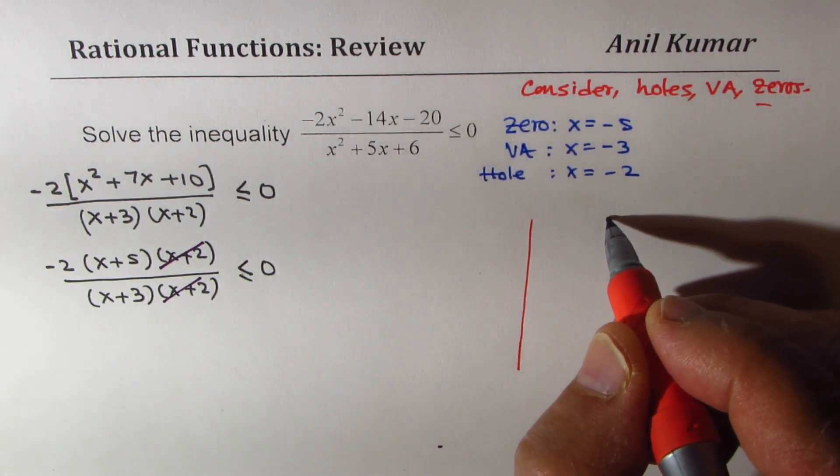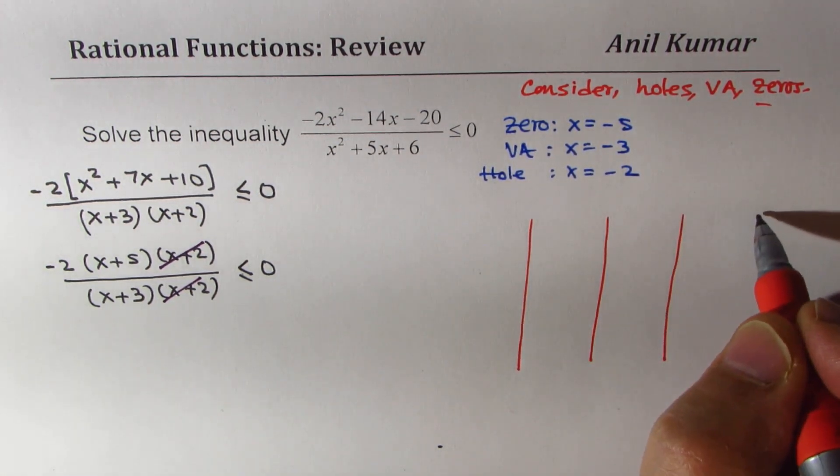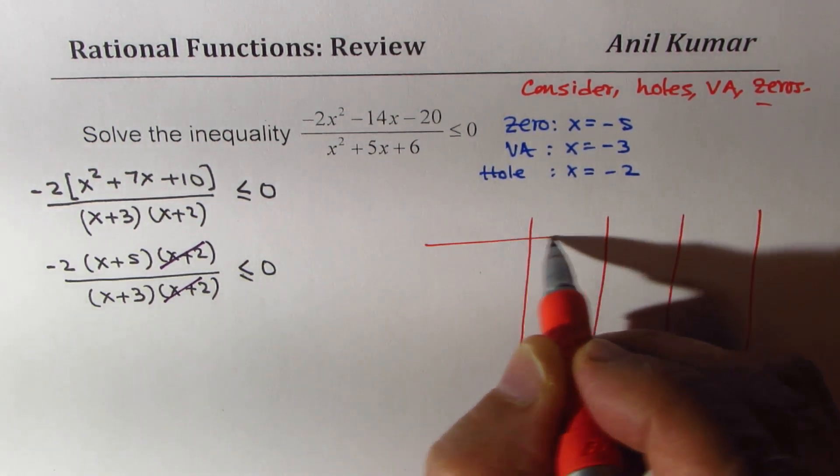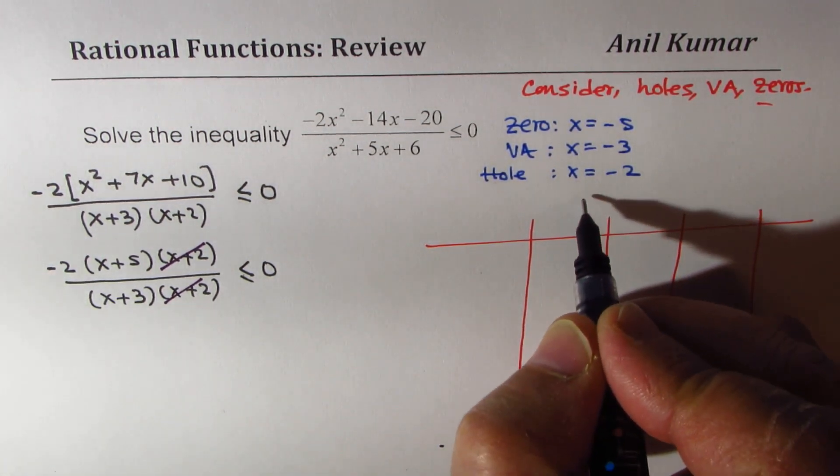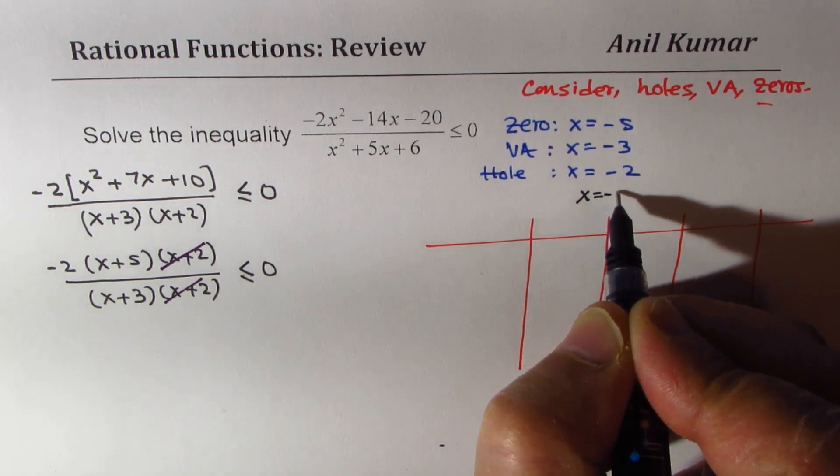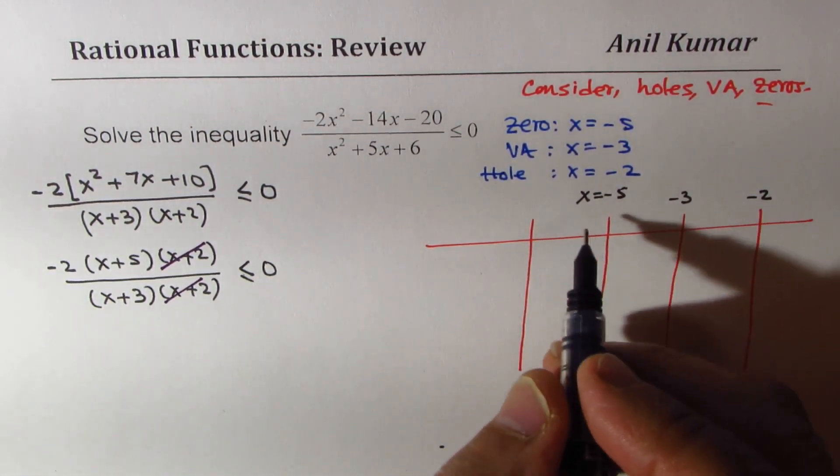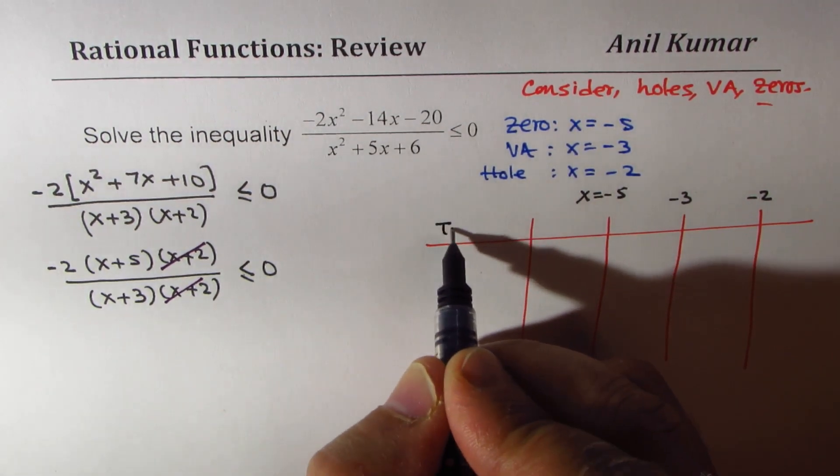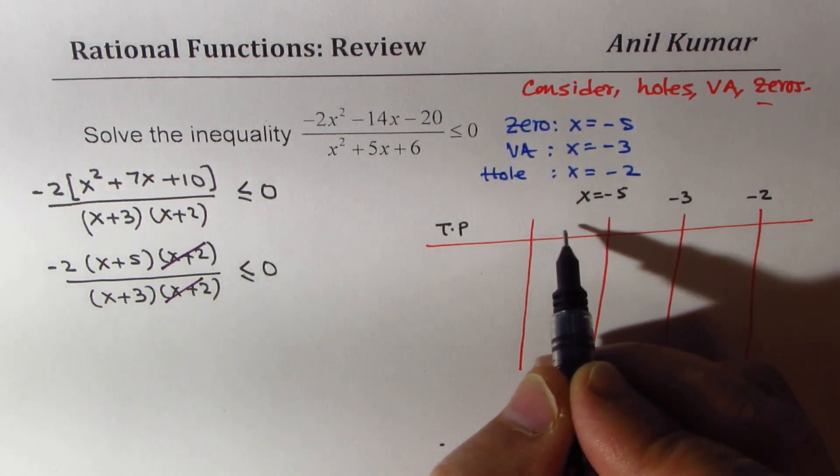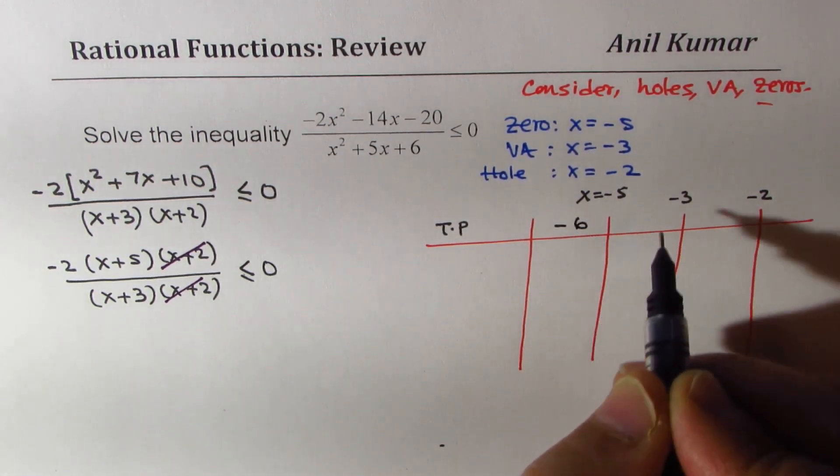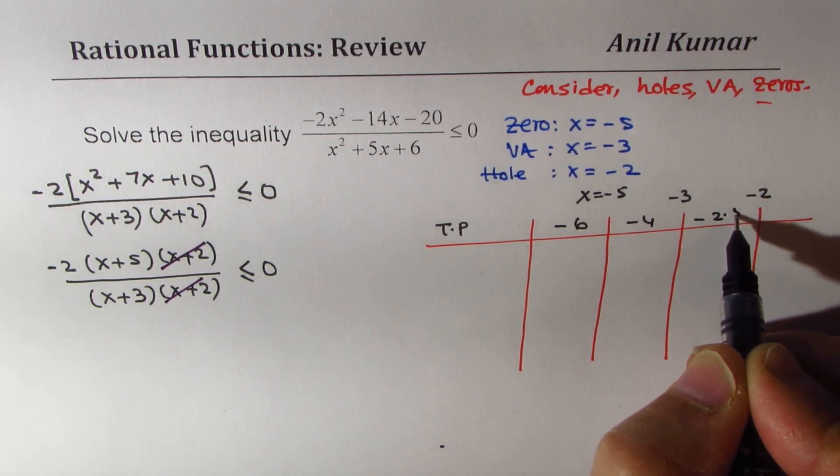So we have minus 5, minus 3 and minus 2. So in these intervals, let's take some test points. So our test point on the left side of minus 5 could be minus 6, here we could take minus 4, here we could take minus 2.5.